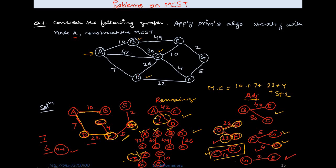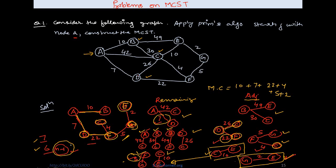After adding F to G, G is a new vertex. The adjacent vertices of G are E and F. F is already included, so I add edge G to E with cost 2 to the adjacent set. C to E is added to the remaining set. The minimum cost among all remaining edges is G to E, so I add G to E to the spanning tree. This completes the spanning tree — all seven vertices and six edges (n-1 edges) are covered.